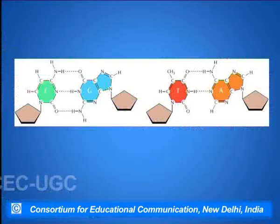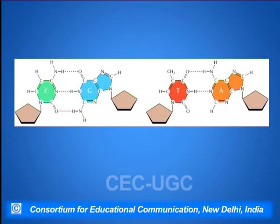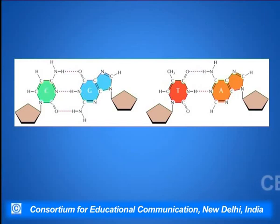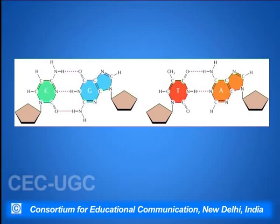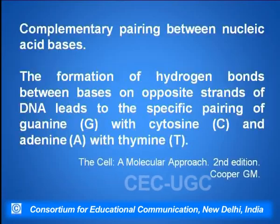The base pairing is shown here. Guanine base pairs with cytosine while adenine base pairs with thymine. Guanine forms three hydrogen bonds to base pair with cytosine, while adenine forms two hydrogen bonds with thymine.